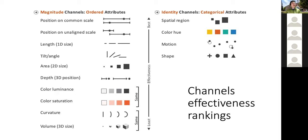We haven't covered new content here; this is mostly revision. We come to the most important slides. There are two types: some channels are good for ordered attributes and others are good for categorical attributes. These are listed on the left for ordered attributes and on the right for categorical attributes, ordered from most effective to least effective. Position is usually the most effective channel for representing ordered attributes.